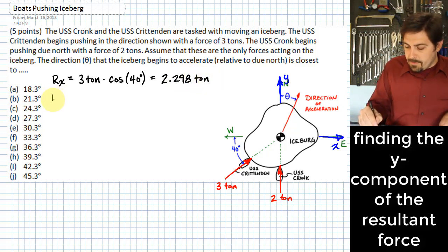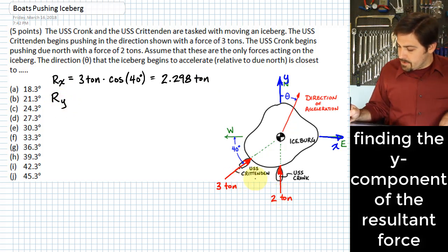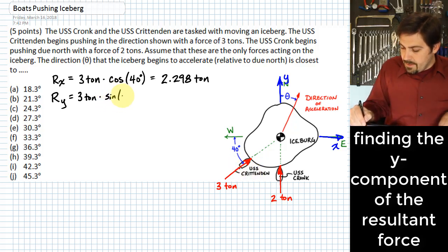Next, we want to figure out—because that's the only component we have in the x direction that you see applied to this iceberg. Next we want to do this in the y. In the y direction we have both the Crittenden as well as the Cronk. And so we have three tons times—we want the opposite component now, so we take the sine of 40 degrees.